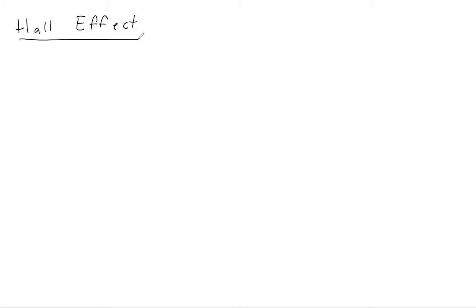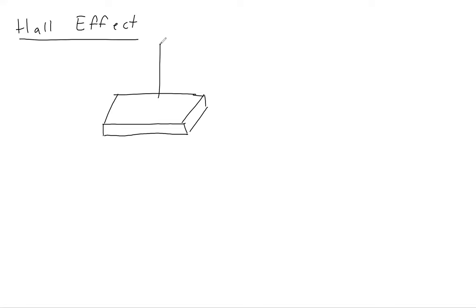Welcome back everyone. This mini lecture is going to be about the Hall effect in the context of the Drude model. Let me briefly remind you of the Hall effect. Imagine we have a two-dimensional sheet of metal — not actually two-dimensional, but the length and width are much larger than the height. We apply a magnetic field H perpendicular to the plane of the material, and an electric field in the x-direction, which creates a current density Jx in the x-direction.